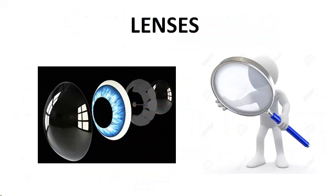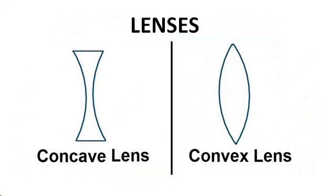Let us discuss about lenses. What are lenses made of? Lenses are made of transparent substances like glass or plastic which can bend light rays. Lenses are of two kinds.